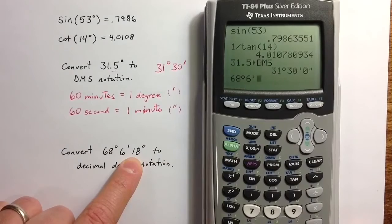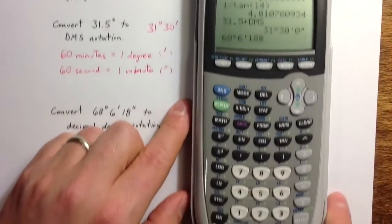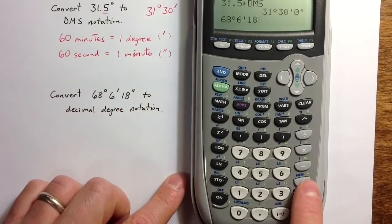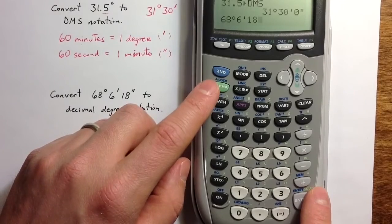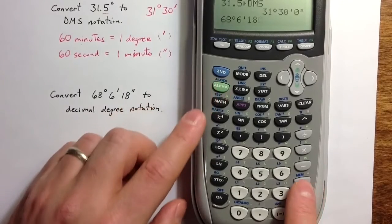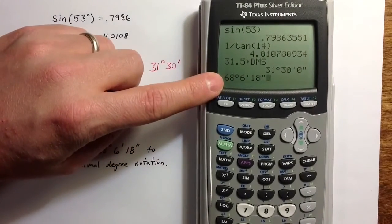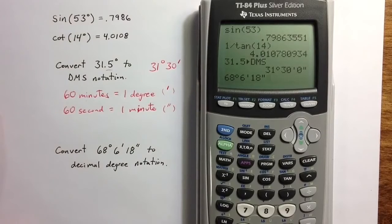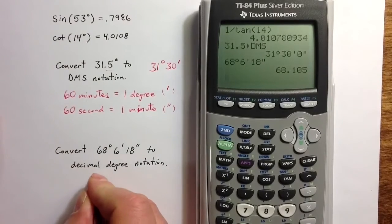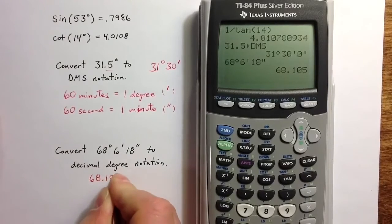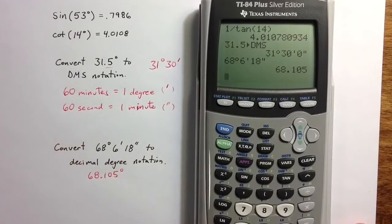And 18 seconds can be identified as 18 seconds by going down above the plus key. The green command is a double quotation mark. To access that, we want to use the alpha key, and then the double quotation mark. Entering this and hitting enter will give us a decimal value, 68.105, for the degree, minute, and second value.